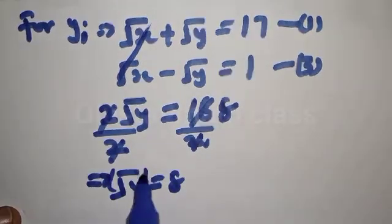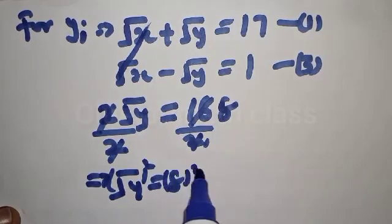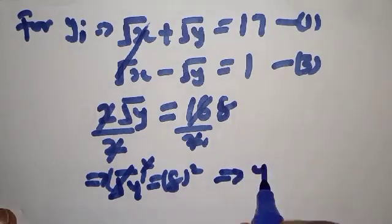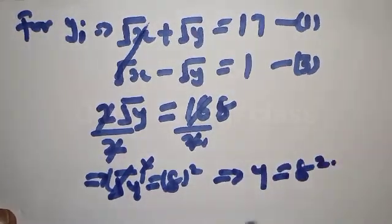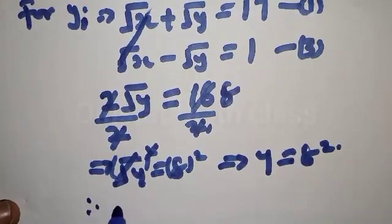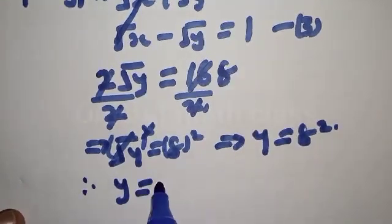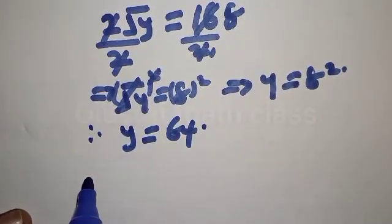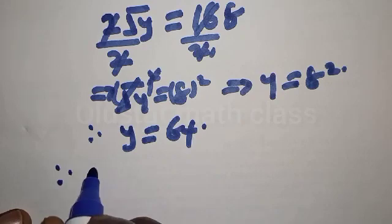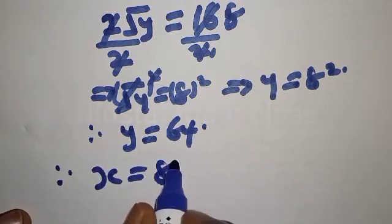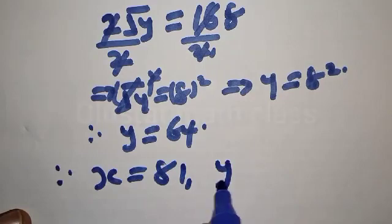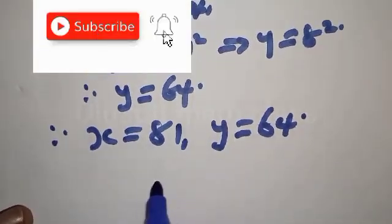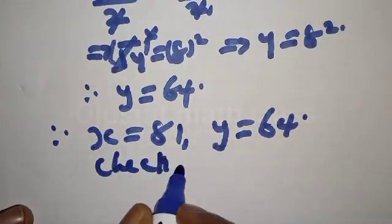Squaring both sides, y equals 8 squared, therefore y equals 64. So we have found both values: x equals 81 and y equals 64.